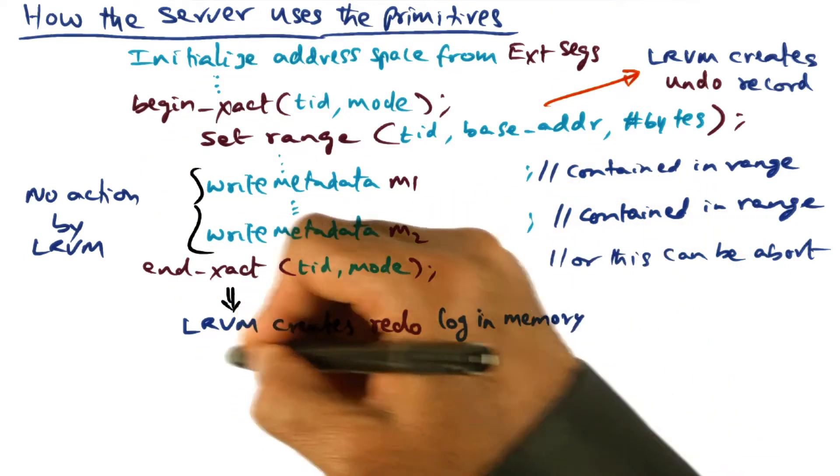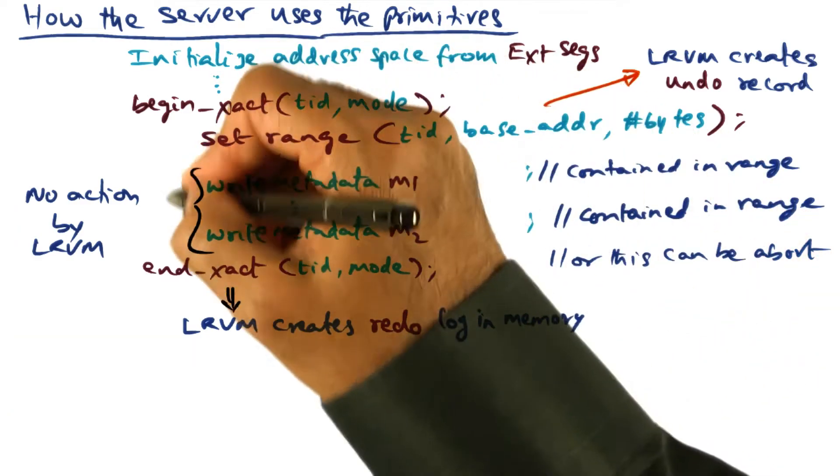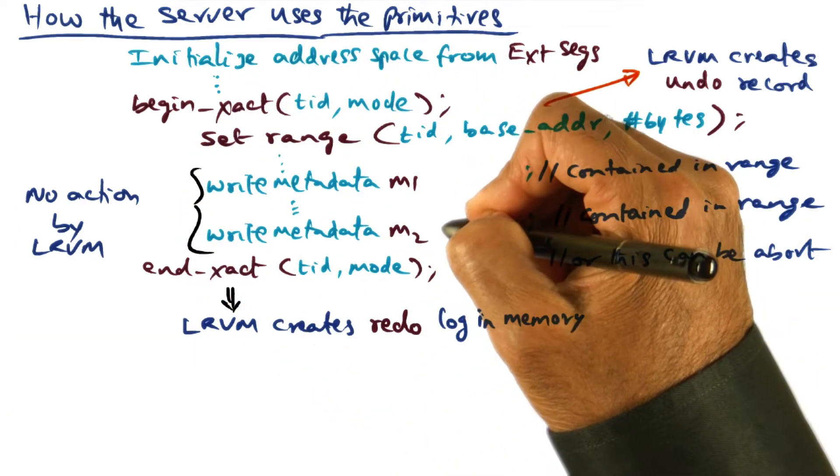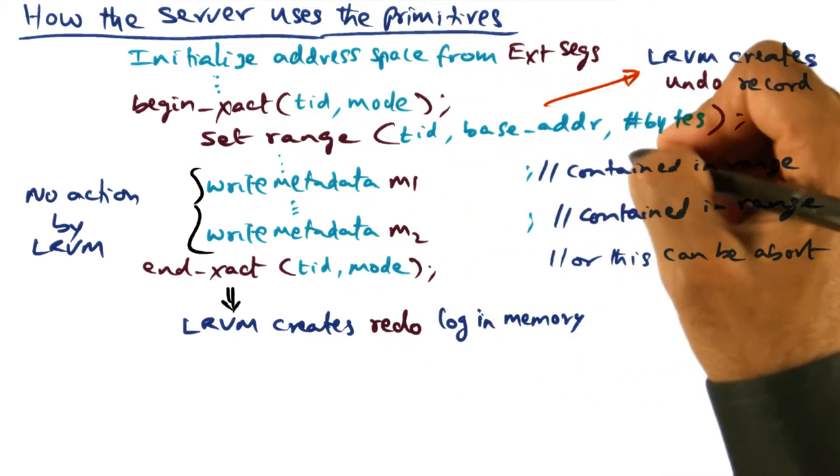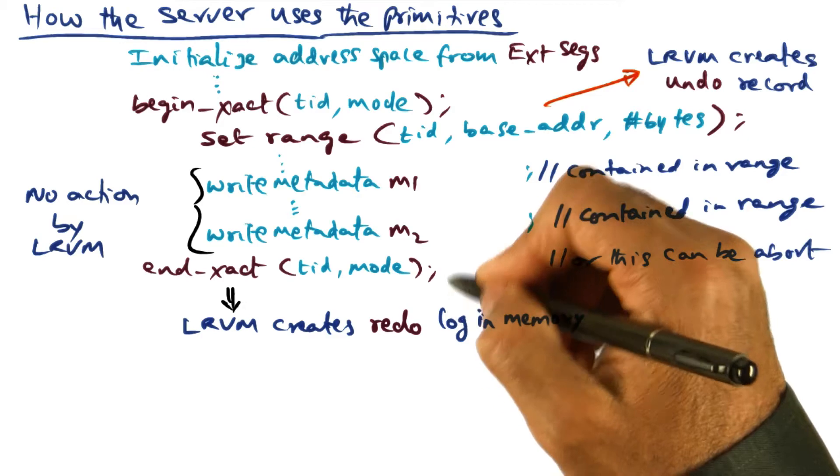So at this point, LRVM creates a redo log in memory of the changes that have been made to the persistent data structures. That is, this region that has been modified, it's going to be written as a redo log.